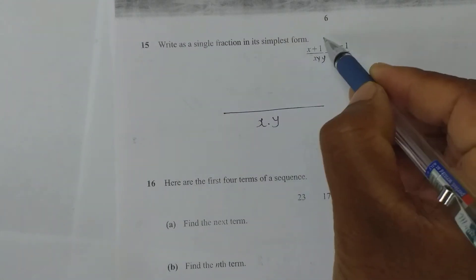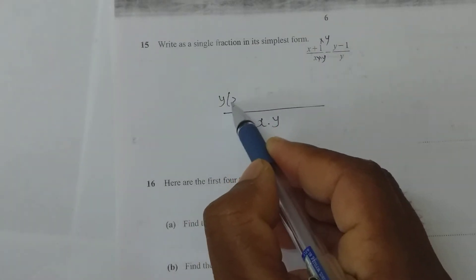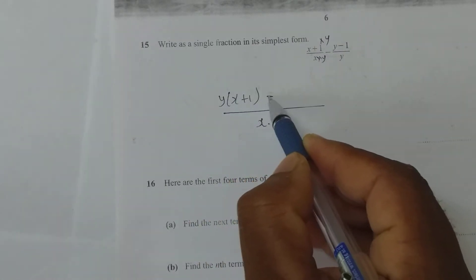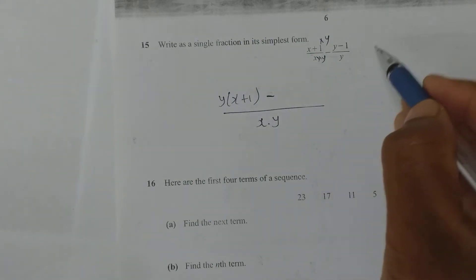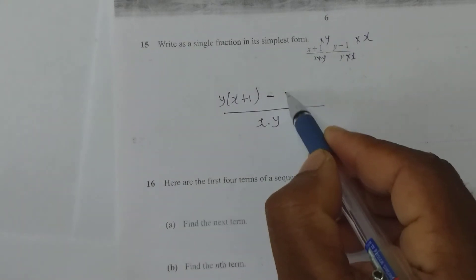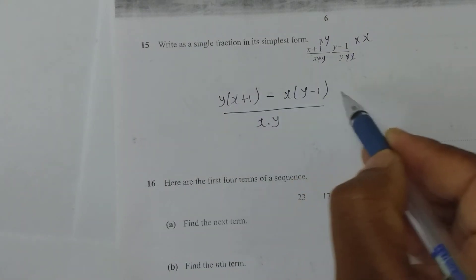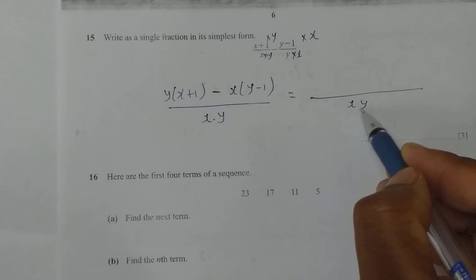Write as a single fraction in its simplest form: (x+1)/x minus (y-1)/y. What would be the LCM of these two? LCM of x and y will be x times y.